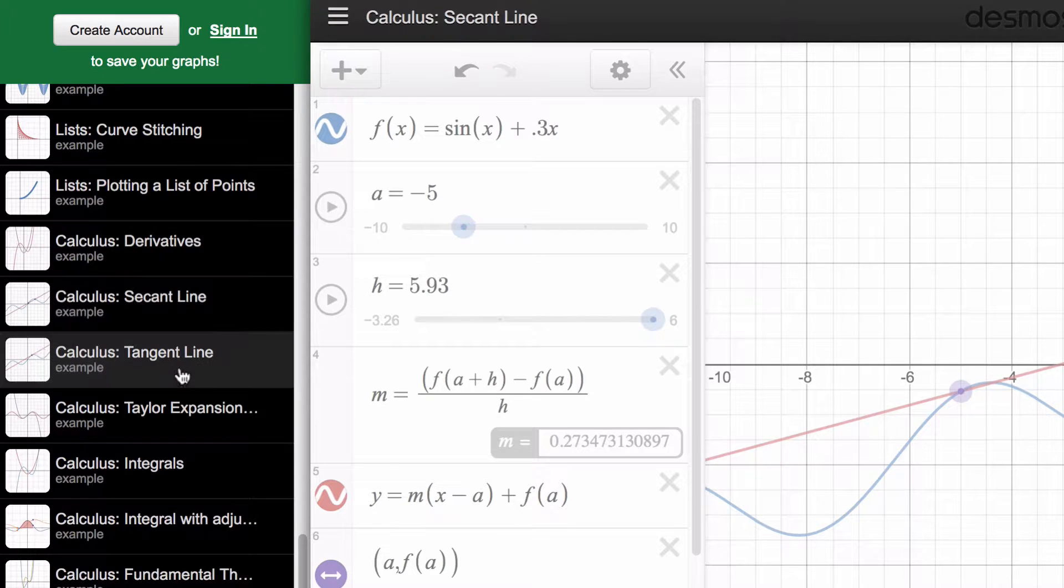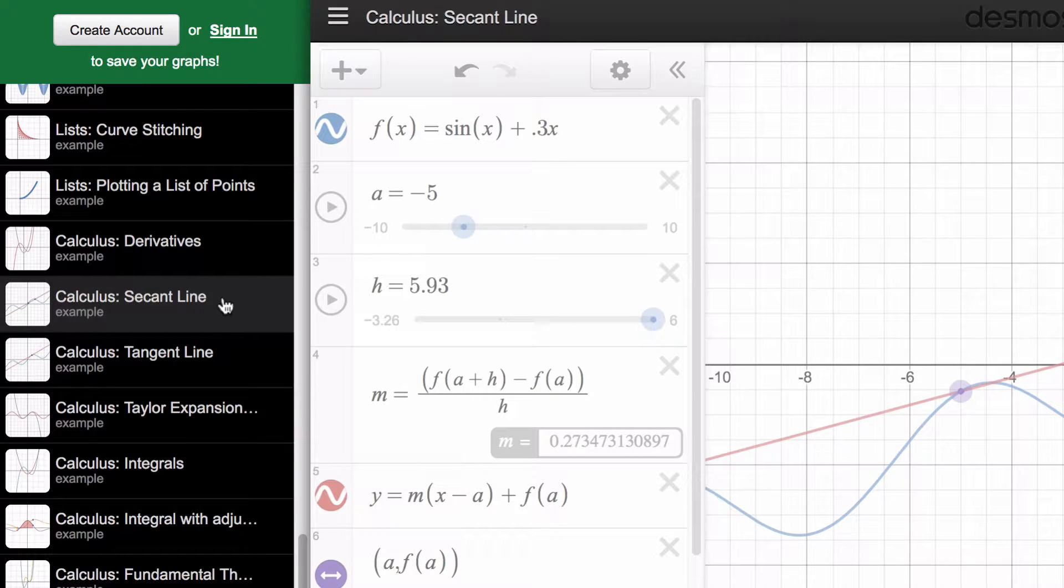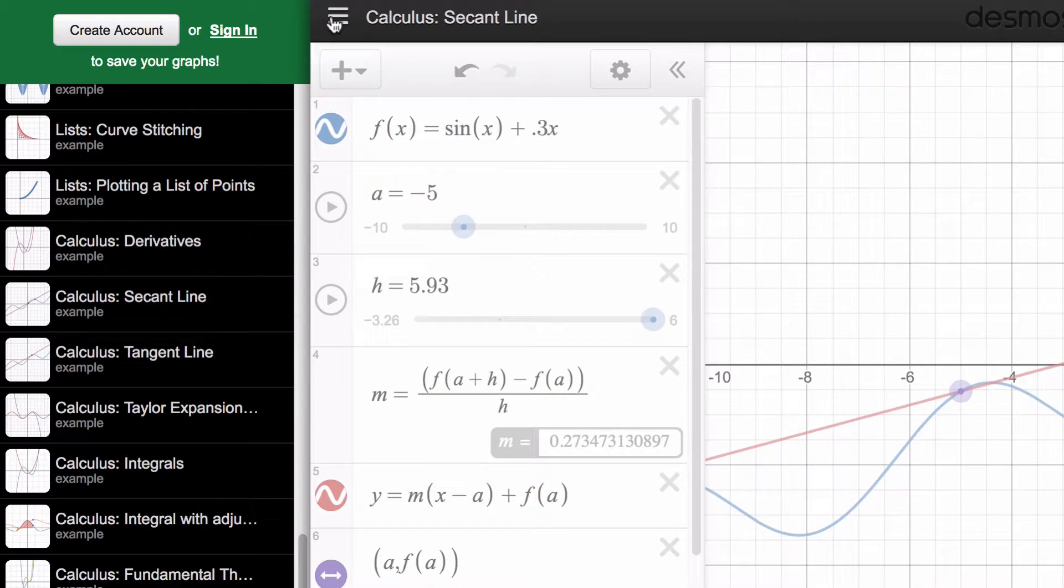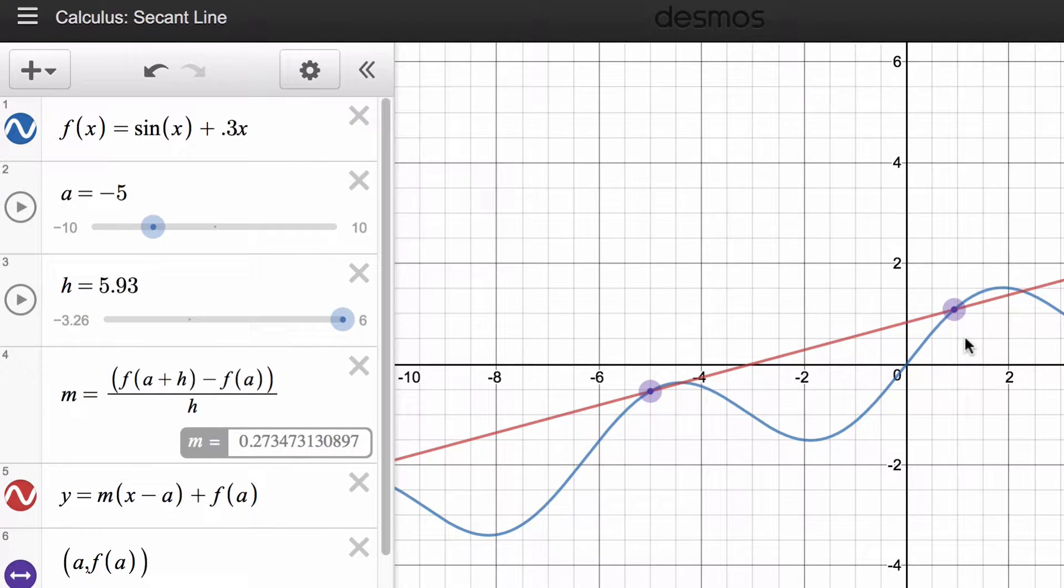Secant line provides us a way to see—notice how there are sliders here—how we define the slope of the secant line. Hopefully this is familiar to you from the homework. You can slide around your a, which is your original point, and you can slide around the h and make it bigger or smaller, or you can move them on the graph if you wanted to.